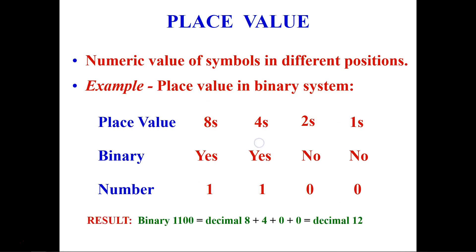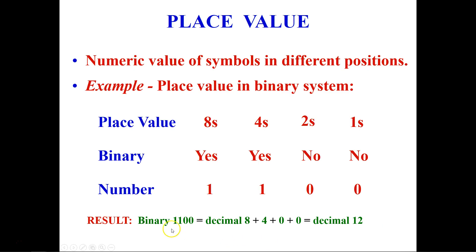Binary 1100 equals decimal 12. Here's how: multiply 0 by 1s — that's 0. Multiply 0 by 2s — that's 0. Multiply 1 by 4 — that's 4. Multiply 1 by 8 — that's 8. The total is decimal 12. This is the way to convert from binary to decimal using place values.